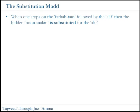Now, with the substitution mad, we have a case where it is peculiar to the fat-tain. So when one stops on the fat-tain, when it's followed by an alif, then the hidden nunsakin — which is known as the tanween — is actually substituted for the alif. So let's take an example of this.